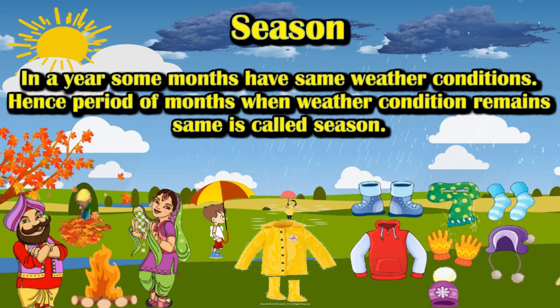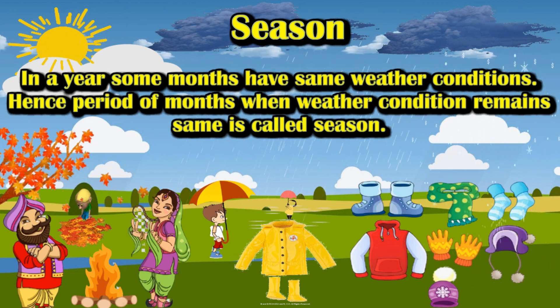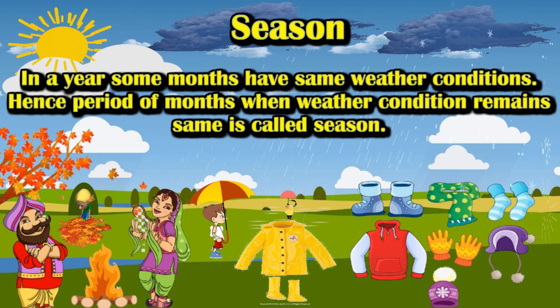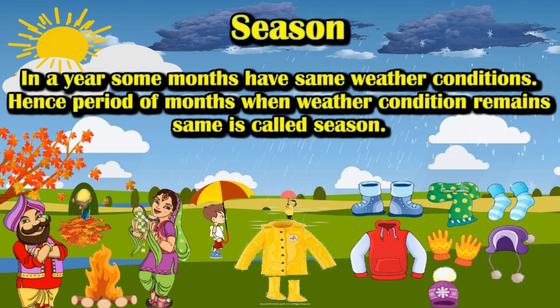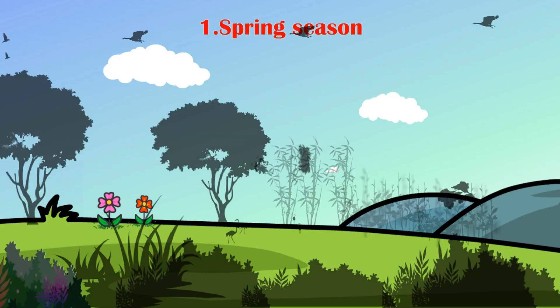Season: some months have the same weather conditions. The period of months when weather condition remains the same is called a season. There are five main seasons in India.